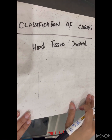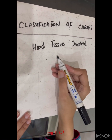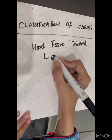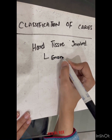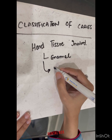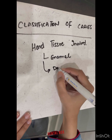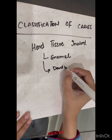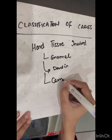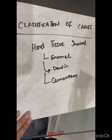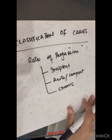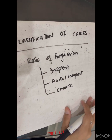The hard tissue involvement classification includes the involvement of enamel in caries, the involvement of dentin in caries, and the involvement of cementum in the caries process.